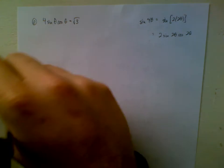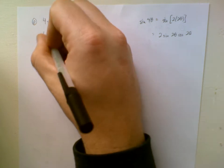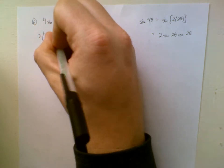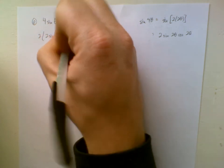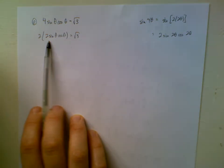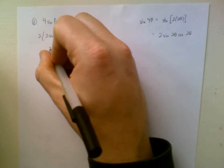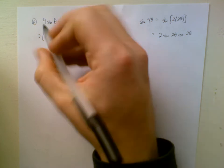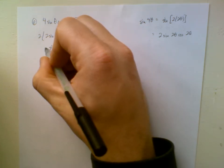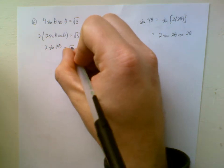All right, but it is similar to that double angle identity. In particular, I could think of it like this. This is 2 times 2 sine theta cosine theta. Ah, and there we have sine 2 theta, right? That's sine 2 theta. So we can say this is sine 2 theta, and this 2 comes along for the ride, right? So we get 2 sine 2 theta equals root 3.